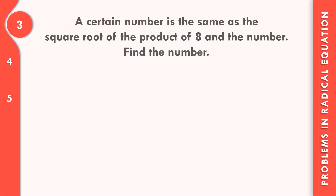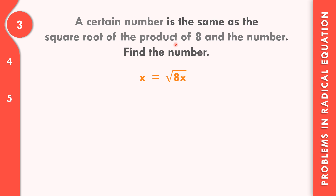How about number 3? A certain number is the same as the square root of the product of 8 and the number. Find the number. A certain number is represented by x. So x is the same as the square root of the product of 8 and the number — meaning the square root of 8x.